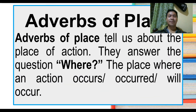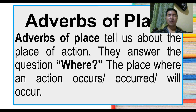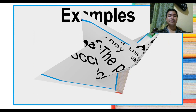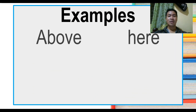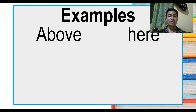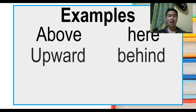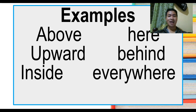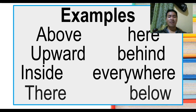Adverbs of place tell us about the place of an action. They answer the question where — the place where an action occurs, happened, or will occur. Examples of adverbs of place: above, here, upward, behind, inside, everywhere, there, and below.